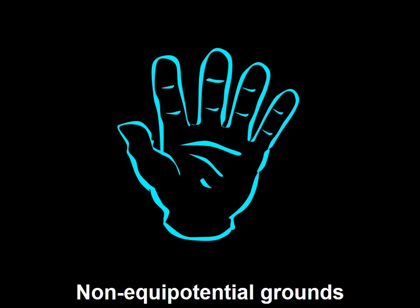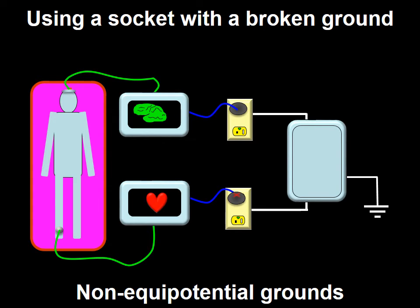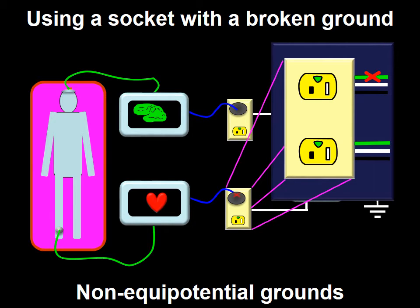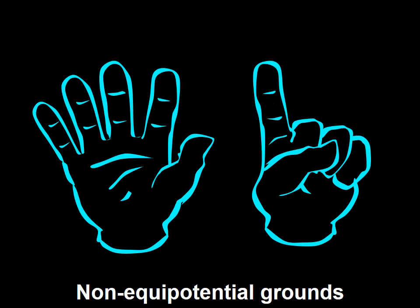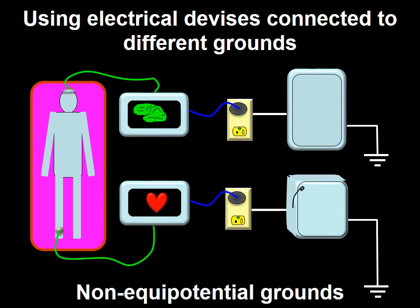The fifth situation is when the broken ground is behind the electrical receptor — that is, between the wall receptacle and the electrical box. The consequence is a potential voltage imbalance. The sixth and final situation is when two equipments connected to a patient are ultimately coupled to different electrical boxes, and the boxes are linked to ground through lines of unequal distance. In this situation the one with the longer line will have more resistance, and if exposed to similar current will generate higher voltage, thus creating a voltage imbalance.